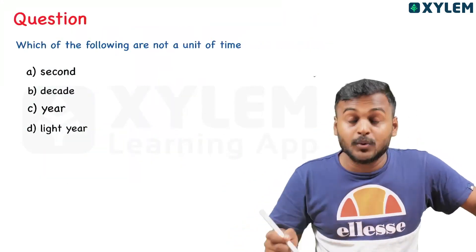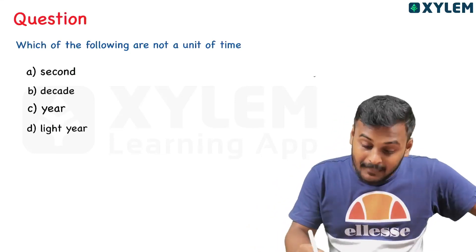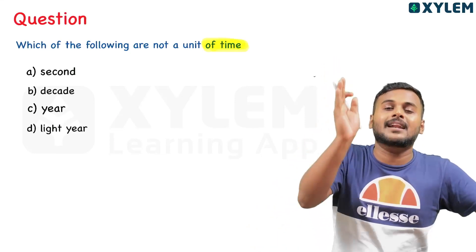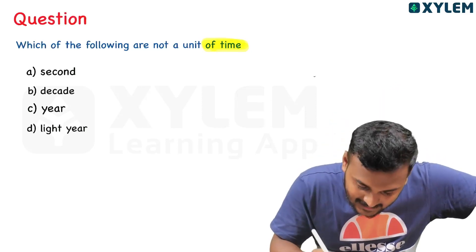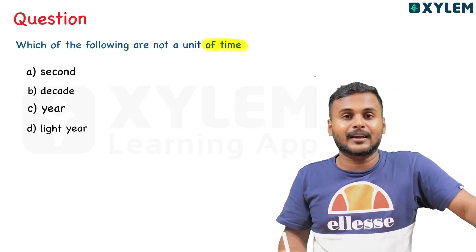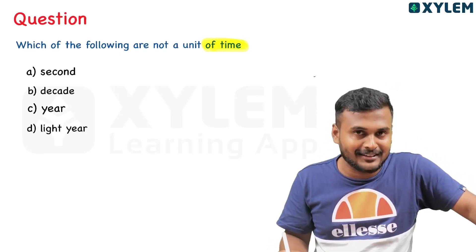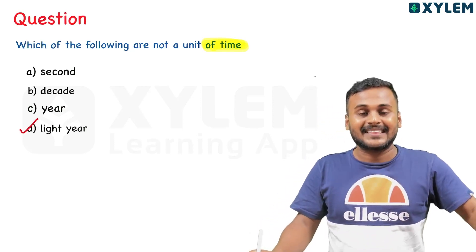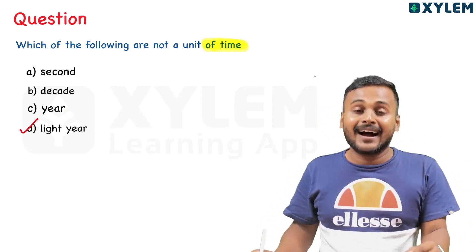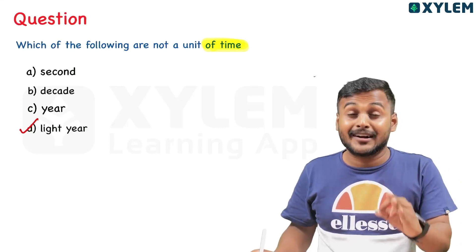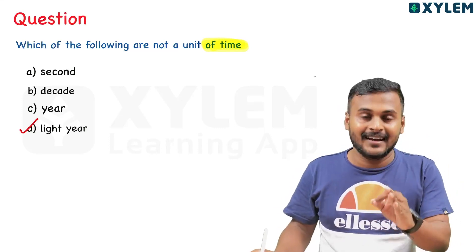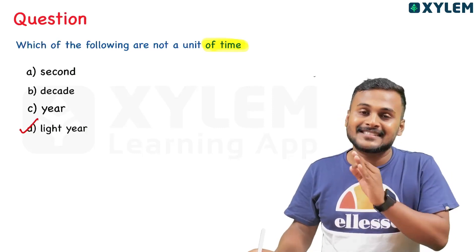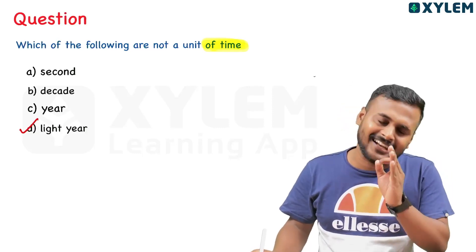Which of the following is not a unit of time? Second and decade are units of time — that is normal. The other option is not a unit of time; it is actually a distance — a light-year is a distance, not time.